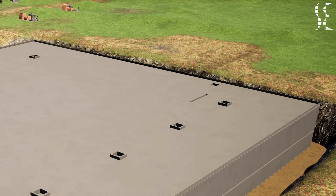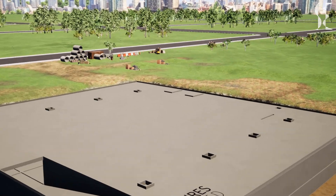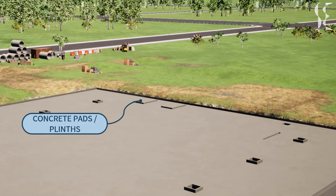Then come concrete plinths or concrete pads. These elements support heavy machinery or equipment such as generators, water pumps, and transformers, and provide a firm base for them. Concrete pads can be reinforced or unreinforced as per design requirement and can be cast on site or come as a precast unit with the equipment.